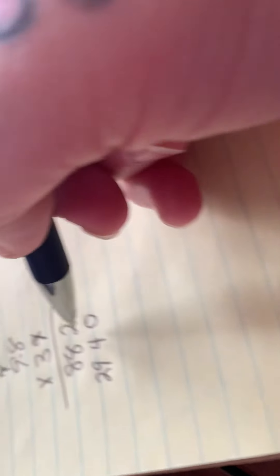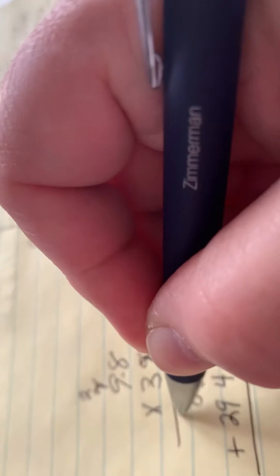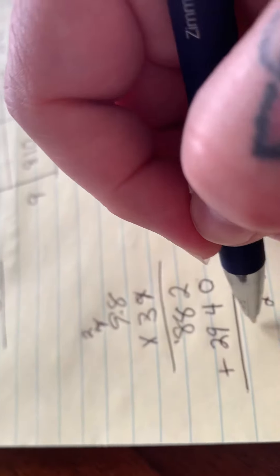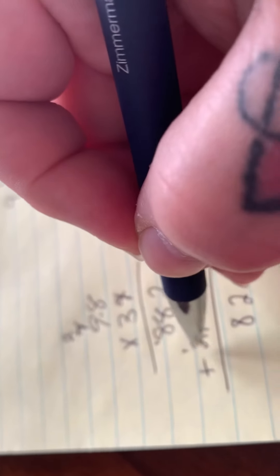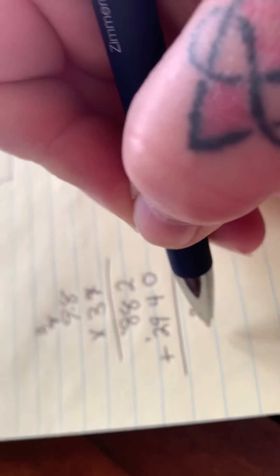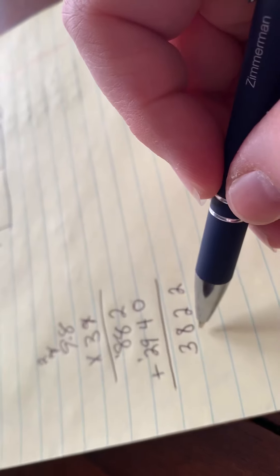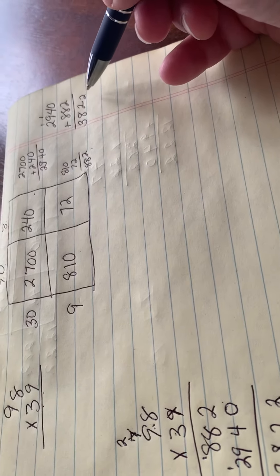Let me add those numbers together. Let's do it again. 2 plus 0 is 2. 8 plus 4 is 12. 1 plus 9, 8 is 9, 9 plus 9 is 18, carry your 1. 1 plus 2 is 3. I believe we have the same number. 3,822 and 3,822.